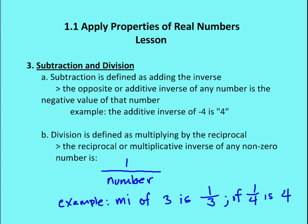Okay, now we're going to talk about simple subtraction and division, just what they mean. Subtraction is defined as adding the inverse of a value. So the opposite or additive inverse of any number is the negative of that number. So the additive inverse of -4 is 4, and the additive inverse of 4 is -4.